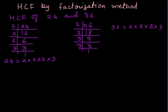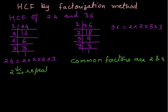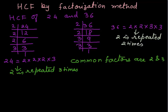Now from this you can easily see that common factors are 2 and 3. In 24, the common factor 2 is repeated 3 times. And in 36, the common factor 2 is repeated 2 times. So while finding the HCF, we will consider the common factor which is repeated the lesser number of times. So we will consider 2 repeated 2 times.